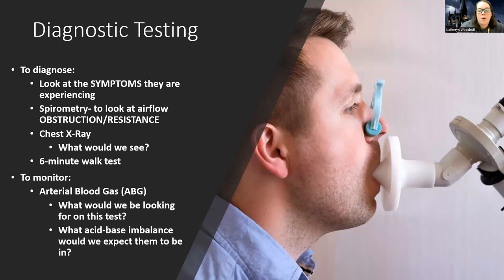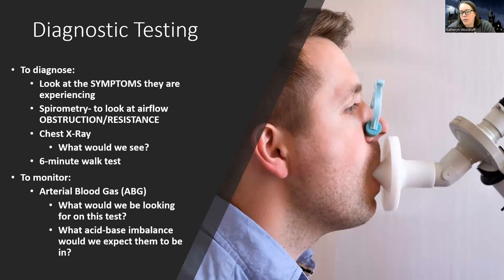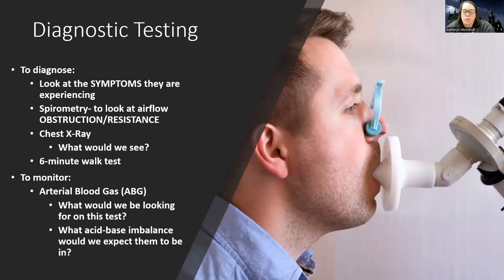We may also get a six-minute walk test since with COPD we're worried about activity tolerance — seeing how they breathe while doing activities. An ABG is also obtained. With asthma we'd expect respiratory alkalosis, but COPD patients are retaining CO2, so I'm looking primarily at the CO2 level. I'd expect them to be in a state of respiratory acidosis because they are accumulating acid — that retained CO2.